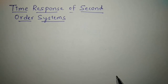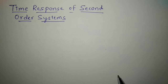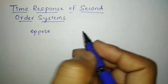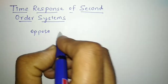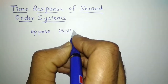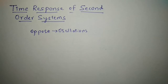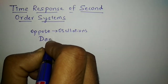Every practical system takes finite time to reach to its steady state. And during this period, it oscillates or increases exponentially. Every system has a tendency to oppose the oscillatory behavior of the system, and this is called damping.